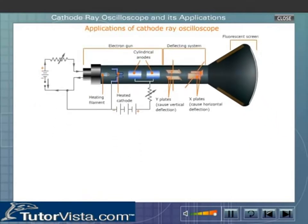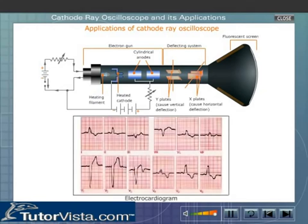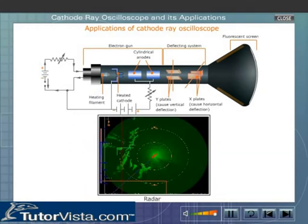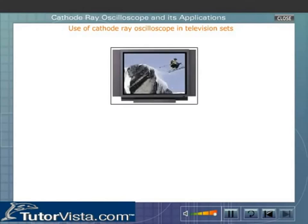Applications of cathode ray oscilloscope: cathode ray oscilloscopes are used in the transmission as well as in the receiving unit of the television system, to convert electrical impulses corresponding to heartbeats into visual signals, and in a radar system to detect enemy aircraft.